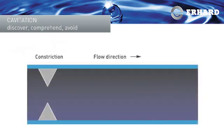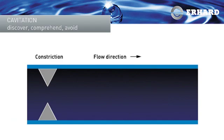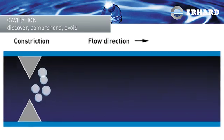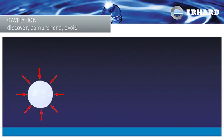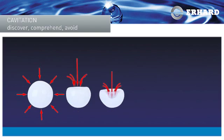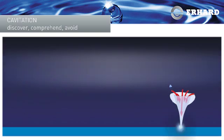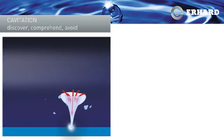In the case of cavitation, the vapour bubbles which form due to a pressure drop implode, recondensing to their liquid state when the pressure rises. The water surrounding the vapour bubbles is accelerated inwards within fractions of a second. Several of the resulting micro jets hit the body or pipe wall at very high speed, which causes pressure peaks up to 10,000 bar.